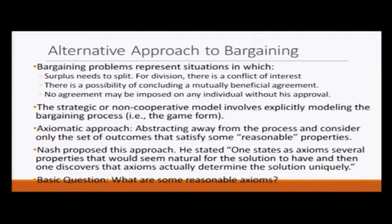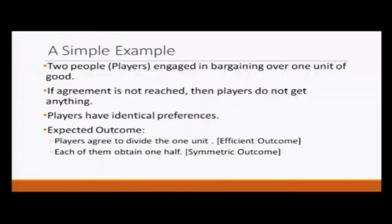Nash — the same economist or mathematician after whom we have Nash equilibrium in the non-cooperative setting — proposed this approach. He stated that one states as axioms several properties that would seem natural for the solution to have, and then one discovers that the axioms actually determine the solution uniquely. So the most fundamental question is: what are those reasonable axioms?